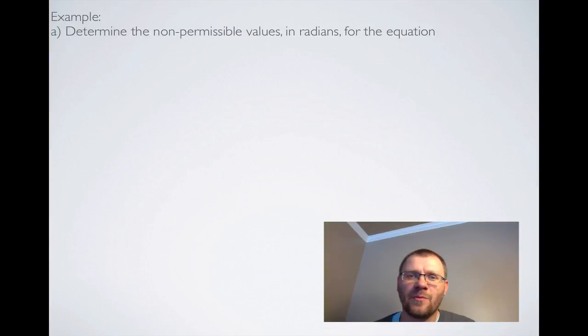An example: determine the non-permissible values in radians for the equation secant x divided by tan x, and b, we're going to simplify that expression. Let's talk about non-permissible values. We know that non-permissible values are values that are going to give us a zero in the denominator. We take a look at tan and we need to know where tan x is equal to zero, because that is not allowed and that would be a non-permissible value.